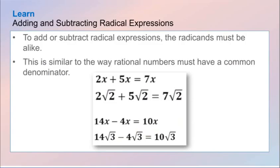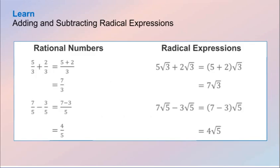The numbers inside the radical symbol — we looked at earlier in the year on how to add and subtract terms. When you have radicals involved, you have to have like radicands. When adding or subtracting, you need to have like radicands. So here, with the square root of 3, you're just adding the coefficients in front. 5 plus 2 gives you 7, and the radicand stays the same.